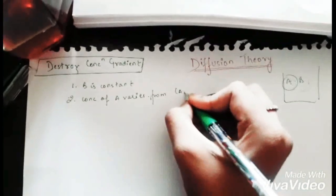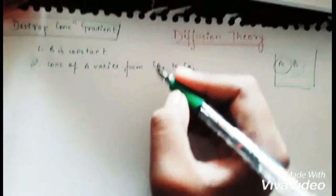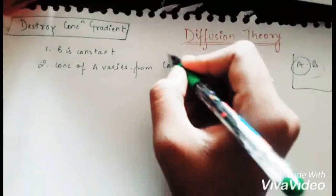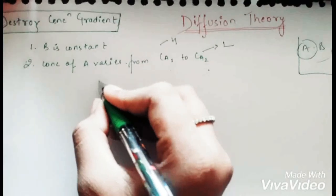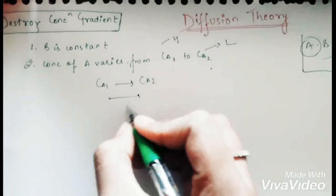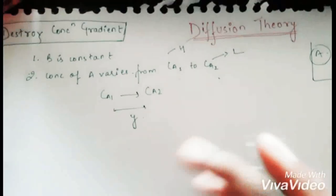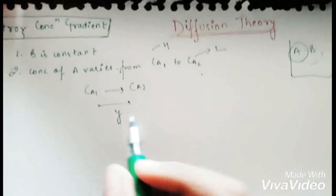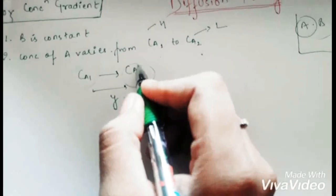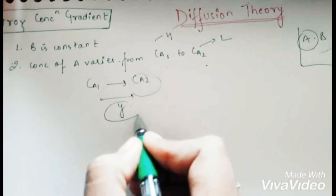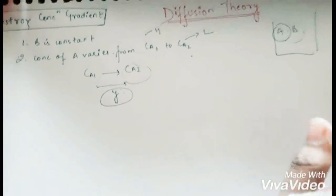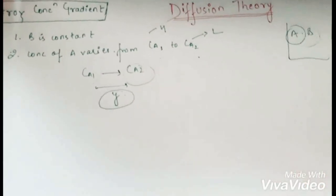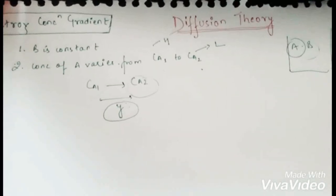The concentration of A varies from Ca1 to Ca2, where Ca1 is the higher concentration and Ca2 is the lower concentration. Component A moves from higher to lower concentration to achieve a uniform composition, traveling a distance y. This diffusion occurs under no external stirring, mixing, or agitation — it happens on its own as a random movement of molecules.